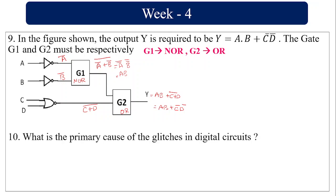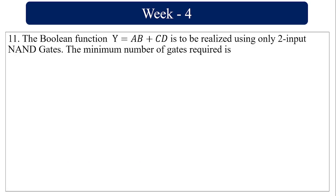What are the primary causes of glitches in digital circuits? Variation in gate delay due to process variations.